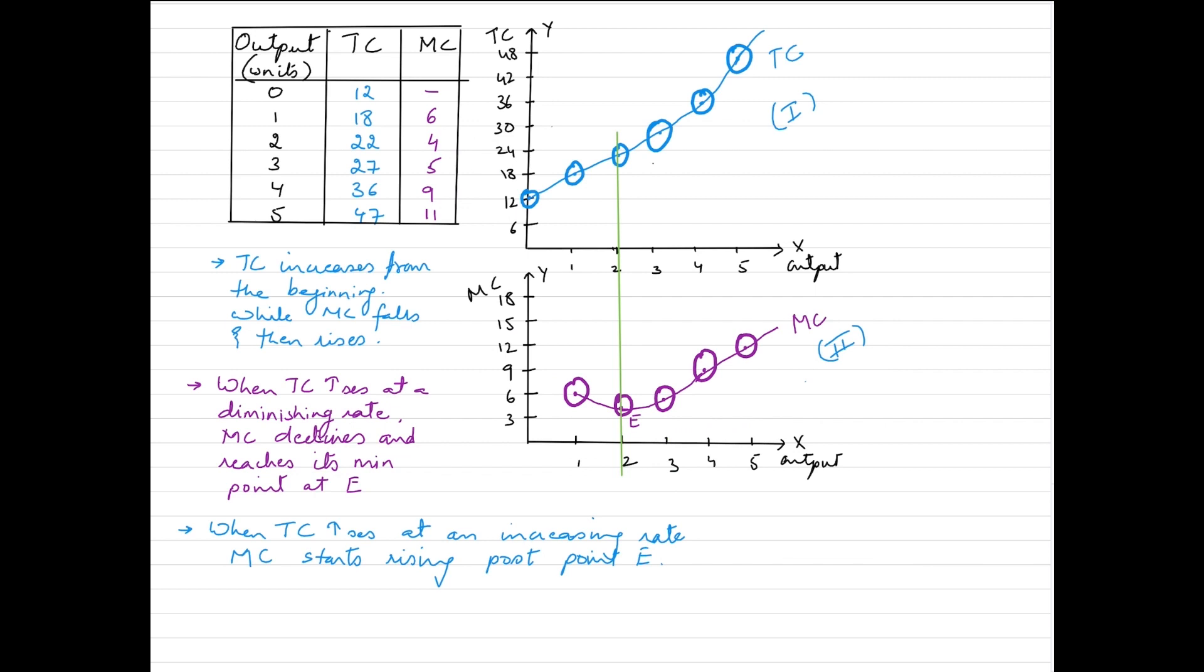When total cost rises at an increasing rate, which is where the curvature of the total cost curve shifts from decreasing trend to increasing trend, we would see that the marginal cost is also rising, and it's rising pretty fast.